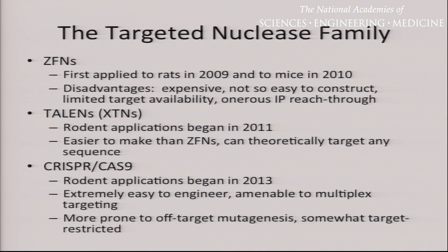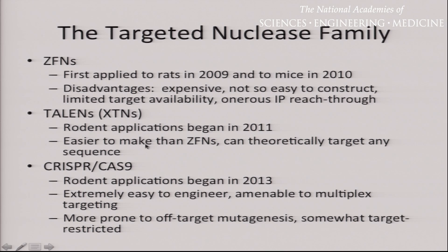The targeted nuclease family came online in 2009. The first zinc finger nucleases came on board, and these were actually first published in rats before mice — which shows the utility of targeted nucleases to go after any species you want. The disadvantages, as Peter told you, were that they were horrifyingly expensive, especially for an academic laboratory, not easy to construct, had limited target availability, and from both commercial and academic points of view, there was a really onerous IP reach-through. Then the TALENs came on board, with rodent applications coming almost immediately in 2011. They were easier to make than zinc finger nucleases and can theoretically target any sequence.